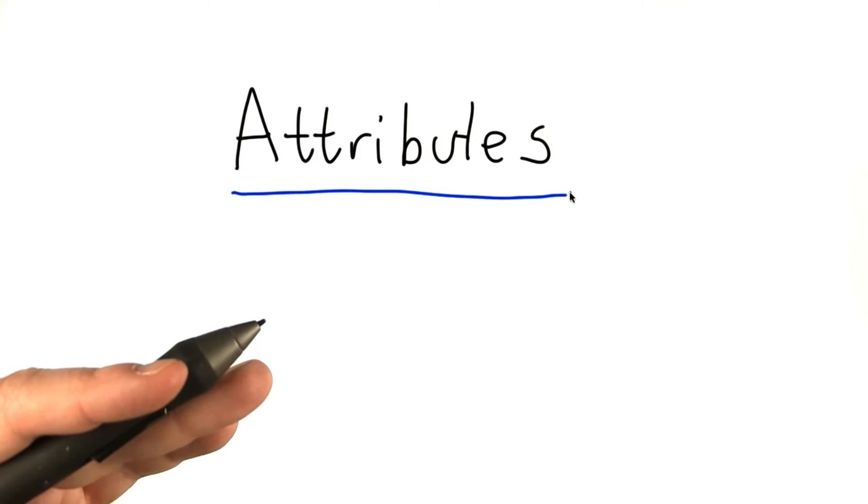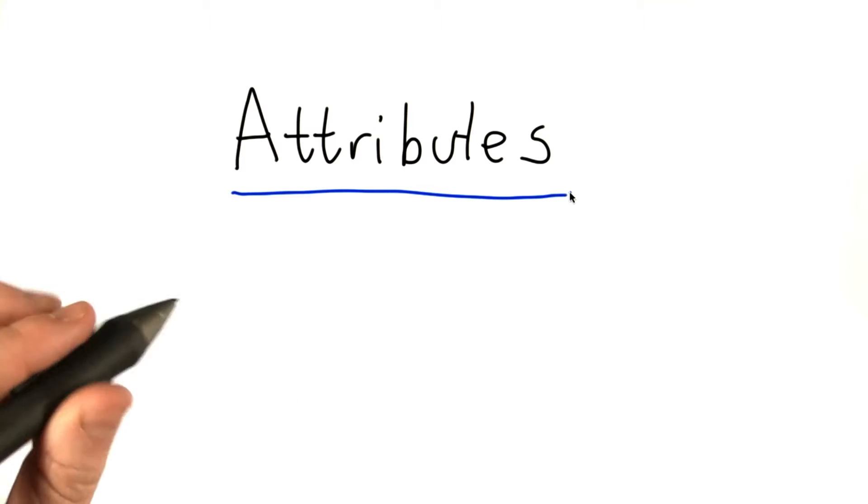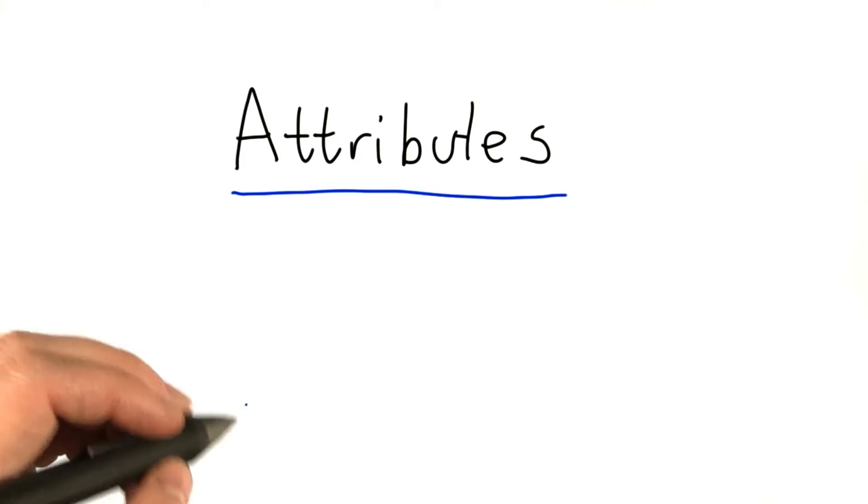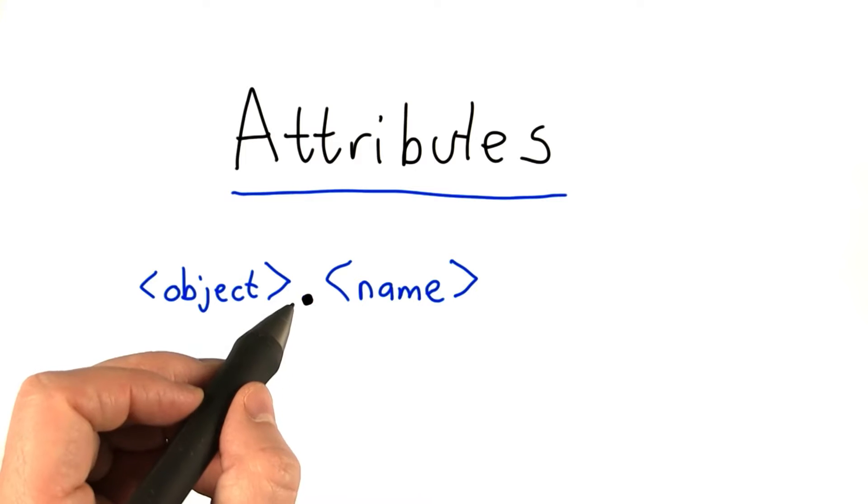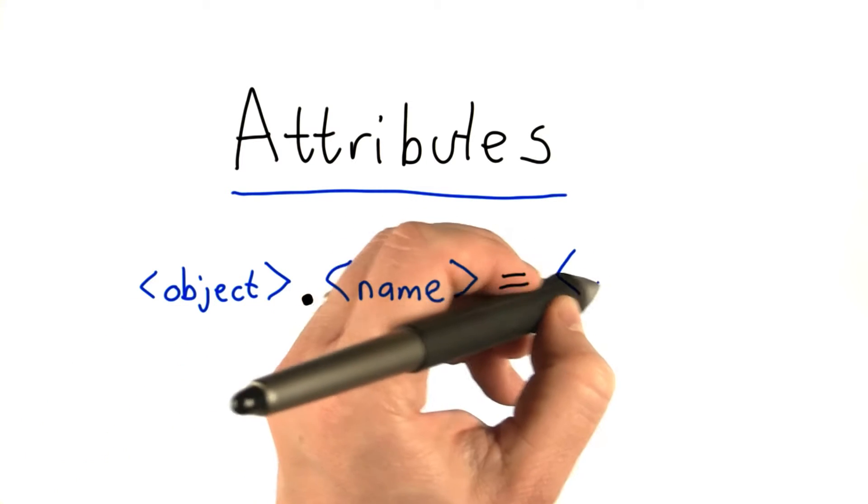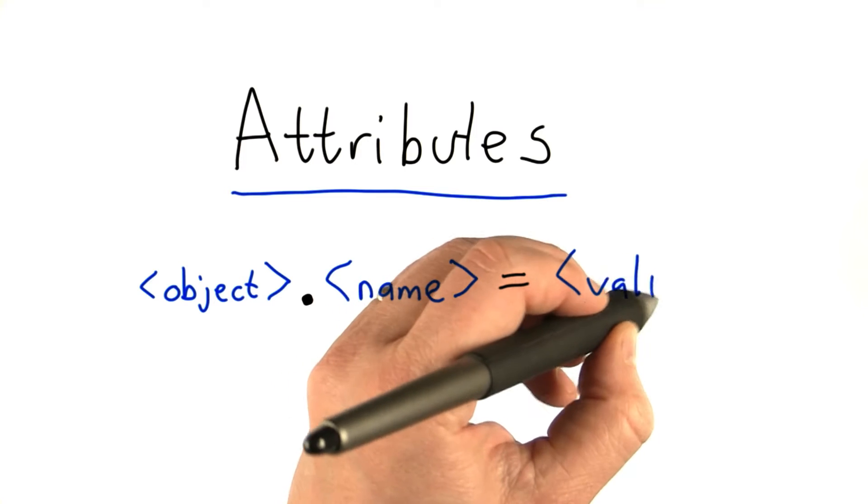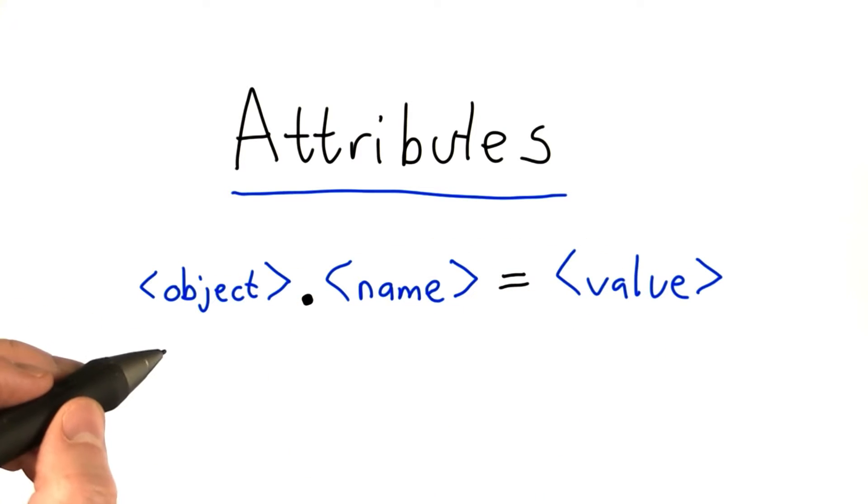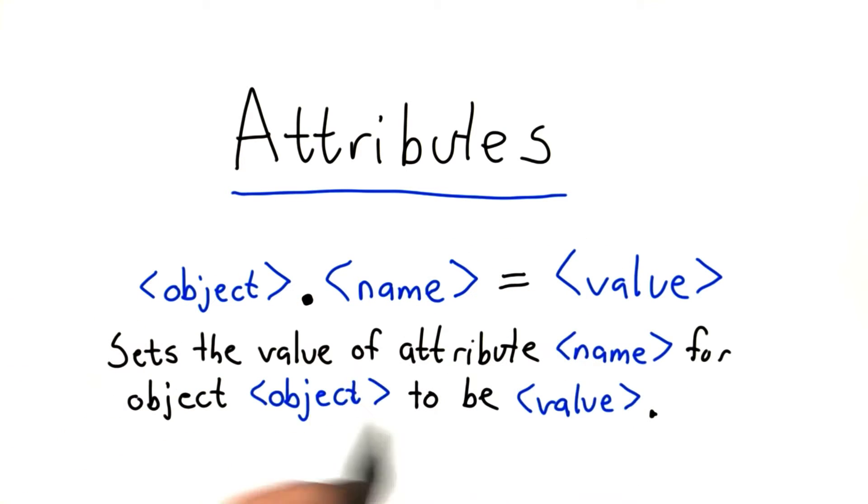If we want to do something more interesting with our classes, we need to add attributes to them. And in Python, we can do that very simply. We can use the object followed by a dot followed by a name. This is the name of the attribute. And if we want to create a new attribute or update an old one, we can use assignment, so we can assign that to some value. What this does is it sets the value associated with the attribute name for the object here to be whatever this expression evaluates to.